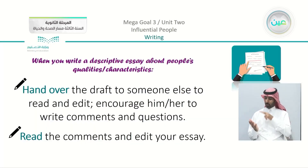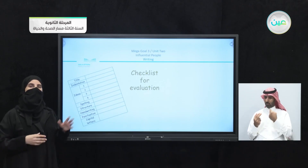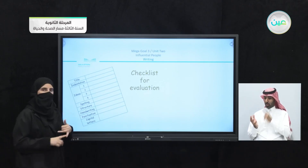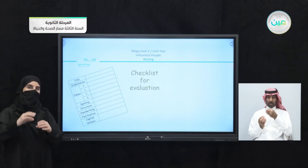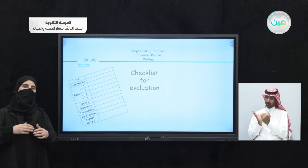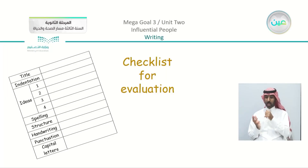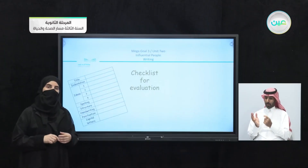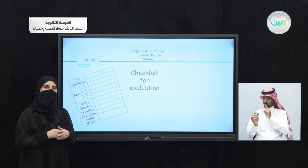You can also use your checklist for evaluation. If you recall from Unit 1, we use the same checklist to make sure you have your title, indentation, complete ideas, and each idea in a different paragraph using topic sentences. You also need to make sure of your spelling, structure, handwriting — that it is clear — and also punctuation and the use of capital letters.